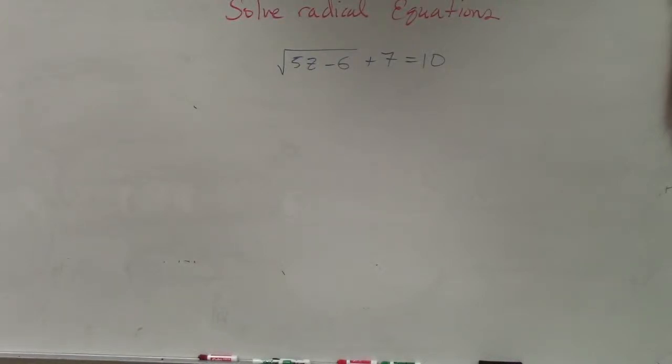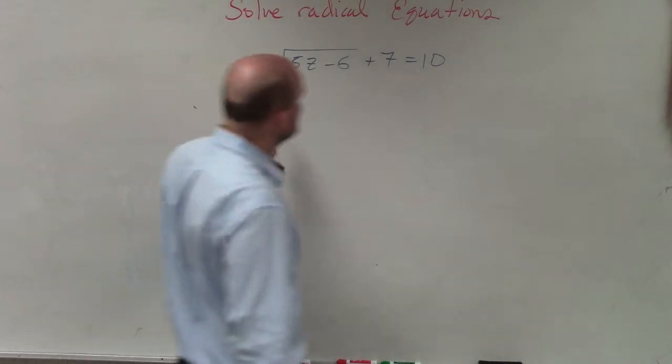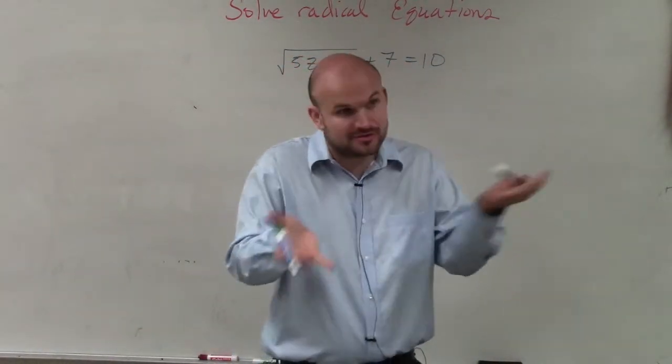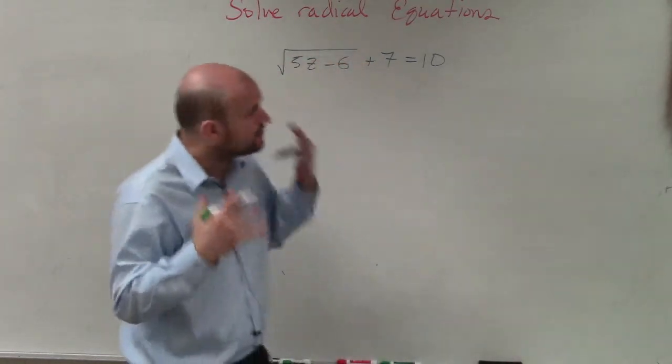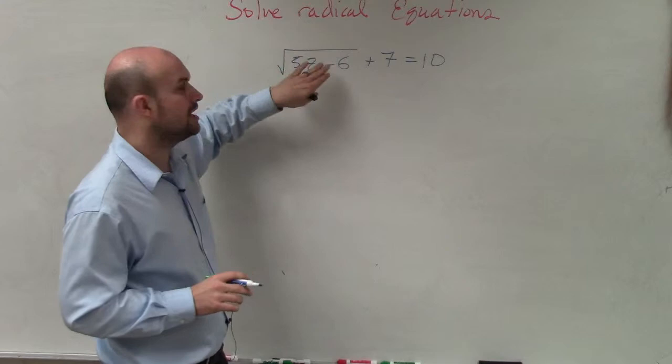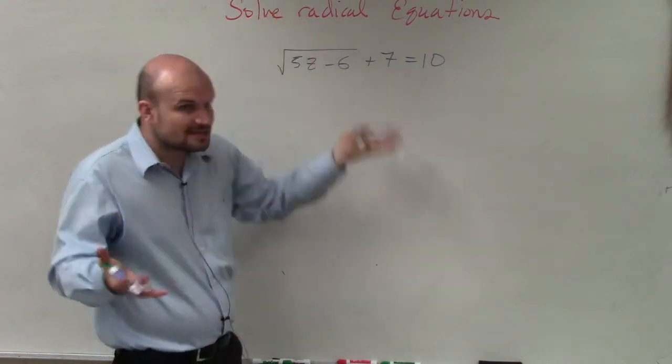All right, so in an example like this, when we are looking into taking the square root, the biggest thing is we know we have to square it, right? We know we have to square both sides. However, we do not want to square it unless we have our square root isolated.